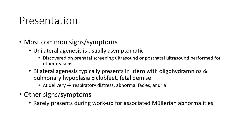Most common signs and symptoms: unilateral agenesis is usually asymptomatic, often found on prenatal screening ultrasound or postnatal ultrasound performed for other reasons. Bilateral agenesis typically presents in utero with oligohydramnios and pulmonary hypoplasia, plus or minus fetal demise at delivery, and respiratory distress. Other cases are rarely found during workup for associated Mullerian abnormality.